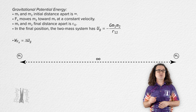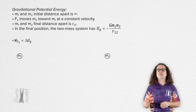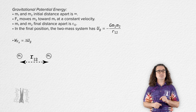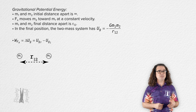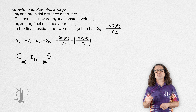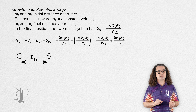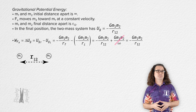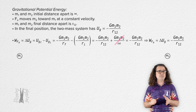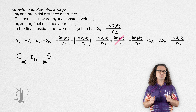The work done by the external force to move mass 2 at a constant velocity from our initial, which is an infinite distance, to our final, which is distance r₁₂, is equal to the change in gravitational potential energy of the two-mass system, or gravitational potential energy final minus gravitational potential energy initial. We can substitute in the equation for gravitational potential energy for both initial and final, substituting r₁₂ for the final distance and infinity for the initial distance. The work done equals the gravitational potential energy of the two-mass system.